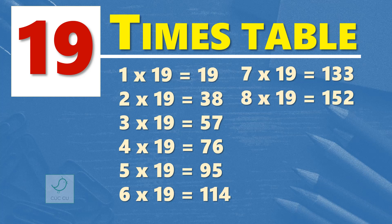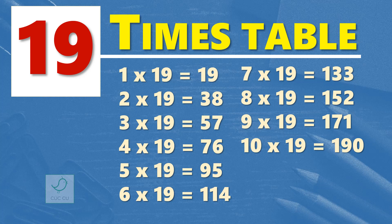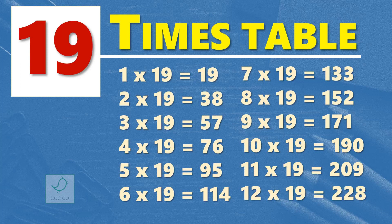Nine times 19 are 171. Ten times 19 are 190. Eleven times 19 are 209. Twelve times 19 are 228. One more time.